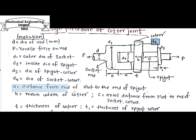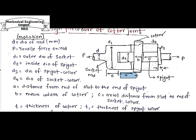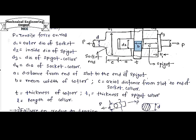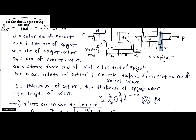A is the distance from the end of the slot to the end of the spigot. B is the mean width of the cotter — because the cotter is a tapered section, we take small b as mean width for design simplification. C is the axial distance from the end of the socket collar. T1 is the thickness of the cotter, and T1 is also the thickness of the spigot collar. L is the length of the collar.